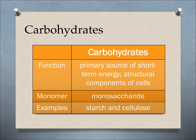Starch can be found in things like breads, anything made of wheat, and pasta. Cellulose is usually found in plant cells, and that's what makes things crunchy, like celery or apples.